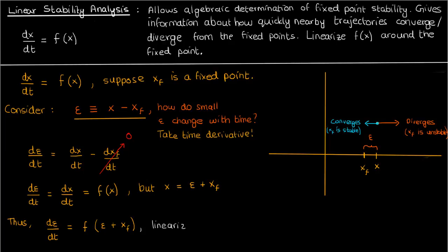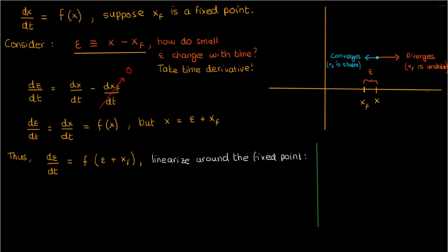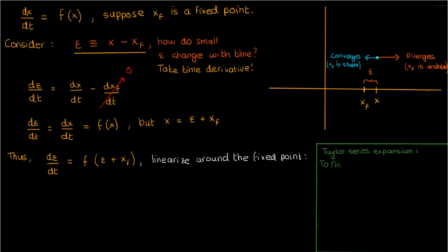Linear stability analysis involves a linearization about the fixed point x_f. So what we do in order to perform that linearization is carry out a Taylor series expansion of f(epsilon + x_f) and truncate that Taylor series expansion at the linear term. Let's quickly review Taylor expansions. If we want to find the behavior of some function g(y) in the neighborhood of a point y_0, we can use the Taylor expansion of g(y).